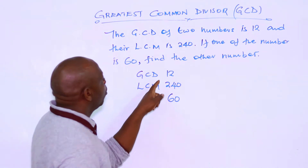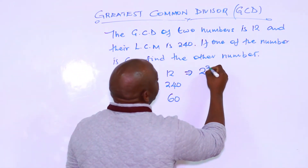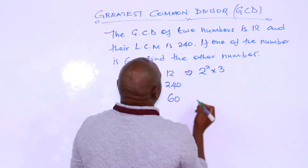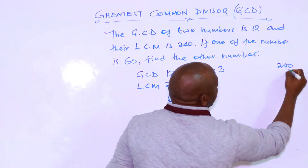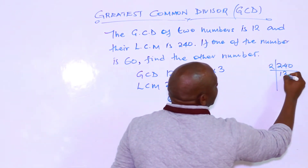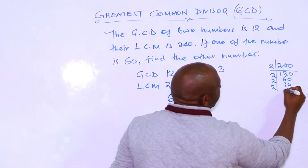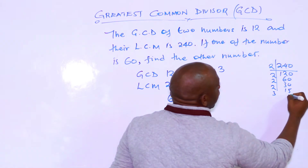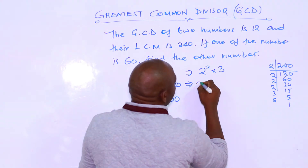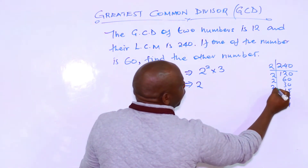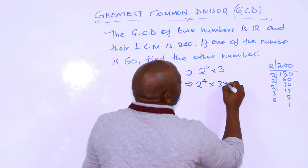So you start by getting the factors of 12, which is 2 squared times 3. Factors of 240: by 2: 120, by 2: 60, by 2: 30, by 2: 15, by 3: 5, by 5: 1. So 240 equals 2 to the power 4 times 3 times 5.